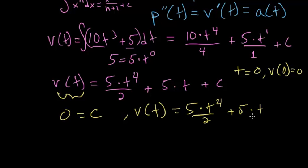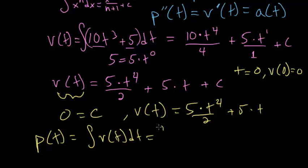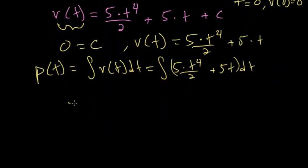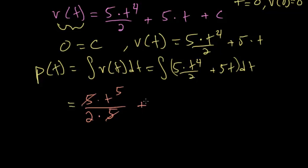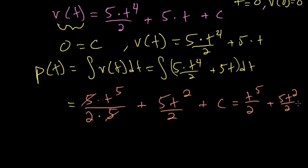Now we want to find the position function. The position function is just the indefinite integral of the velocity function with respect to t. So we integrate (5t⁴/2 + 5t) dt. Integrating term by term: (5/2)t⁴ integrates to (5/2)(t⁵/5) — the two 5s cancel — giving t⁵. And 5t integrates to 5t²/2, plus a constant. Simplifying, we have p(t) = t⁵/2 + 5t²/2 + C.